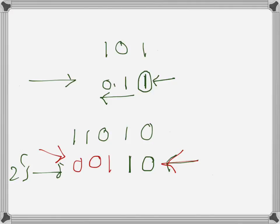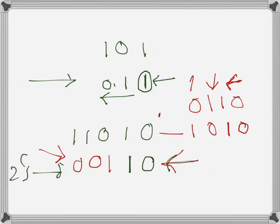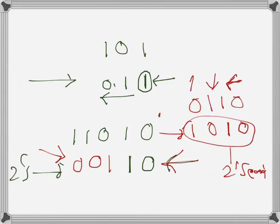To summarize: to find the two's complement of any number, start from the right, keep going to the left until you get the first one, and do not change anything up to that point. Then invert the rest. For example, starting from the right of a number, we find the first one, keep 10 unchanged, then invert the remaining bits to get 01 — and that gives us the two's complement.